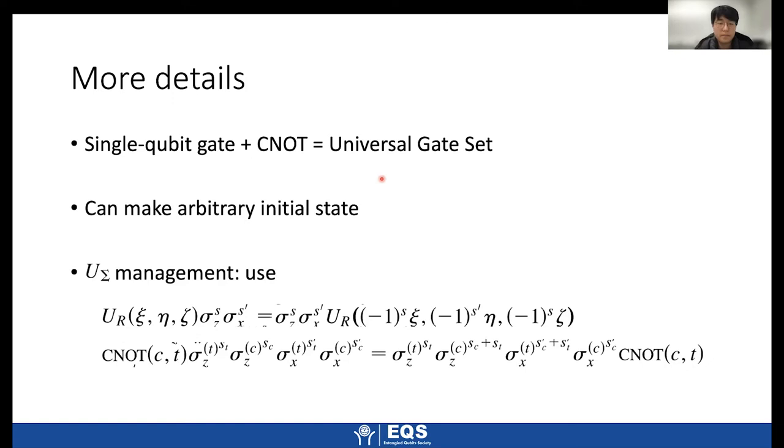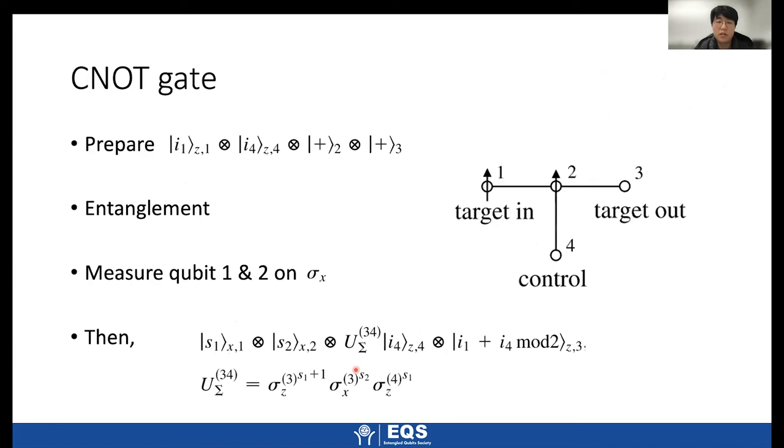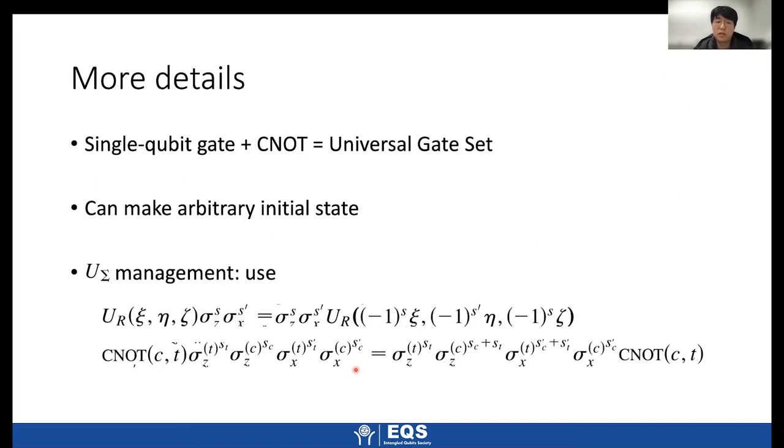We assume that creating any initial state is possible, but actually creating this kind of initial state is very hard. But using this single qubit gate scheme and CNOT gate scheme, we can implement any arbitrary initial state. So we apply some single qubit gates and CNOT gate to make a general initial state. So that's how we make initial states and for compensating auxiliary rotation using this relation, we can see that auxiliary rotations can go to front or go to back. So we can just keep making the auxiliary operation forward. And at the final measurement, we can take care of that auxiliary rotation into a measurement basis. So that's how we take care of U-sigma.